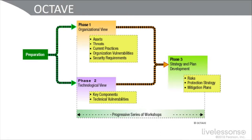In phase two, we get down to the technological view. What are the key components of getting those certificates deployed on all of those iPhones and Androids? What are the operating systems we're using? How are we going to get those certificates in an EAP-TLS environment? What are some of the technical challenges, vulnerabilities, and challenges we have? This is all going to be rolled out through a progressive series of OCTAVE workshops. Then phase three is strategy and plan development, where we plan and develop based on risks our agreed-upon strategy, and the workshops will produce mitigation plans as their output.